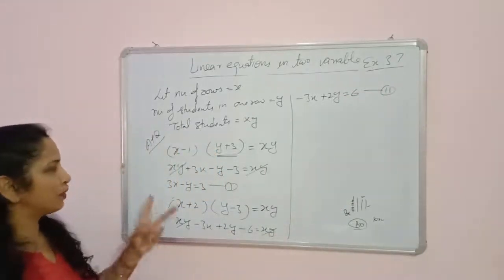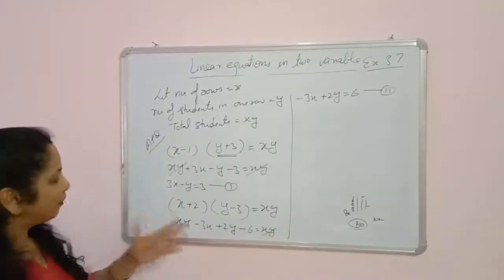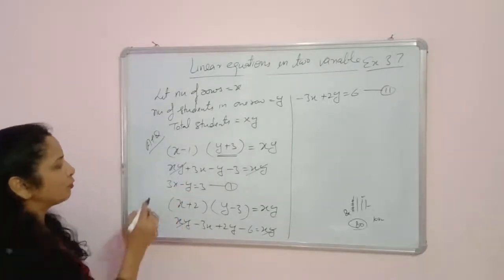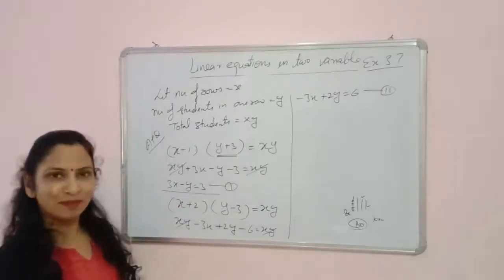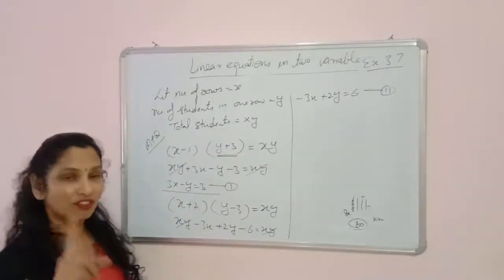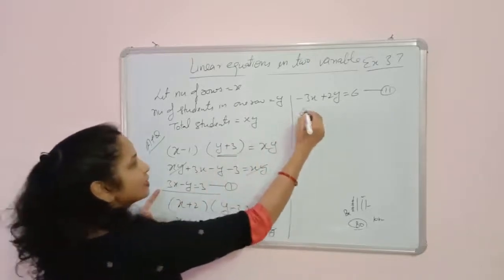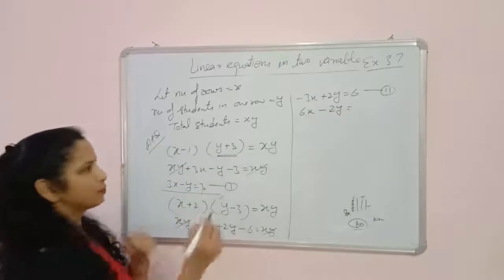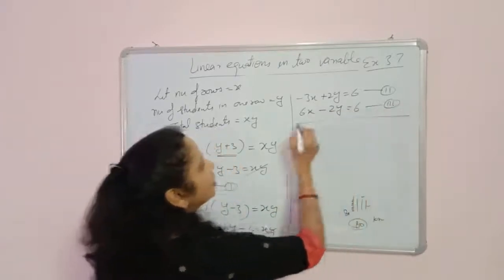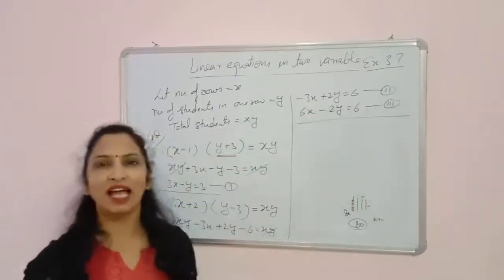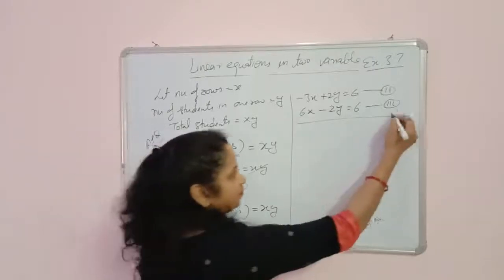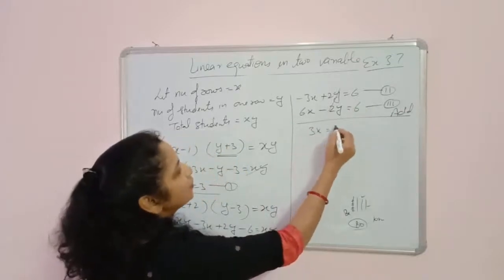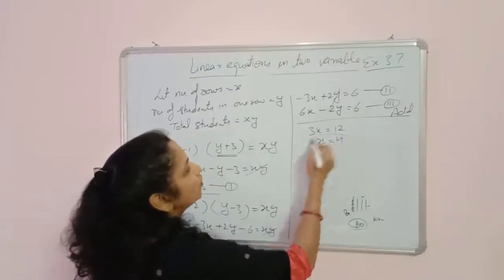To solve, multiply equation 1 by 2 to get equation 3: 6x minus 2y equals 6. Since both y terms have the same coefficient but opposite signs, we add equations 2 and 3. The y cancels and we get 3x equals 12, so x equals 4. The number of rows is 4.